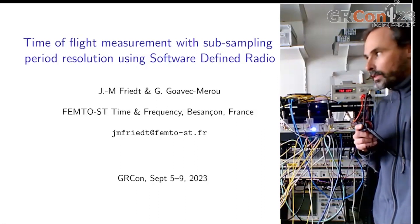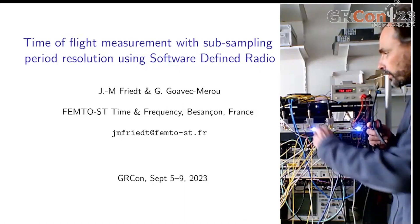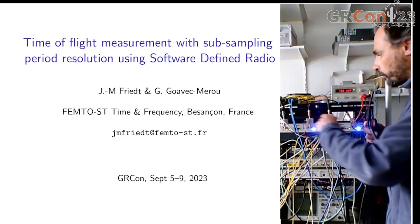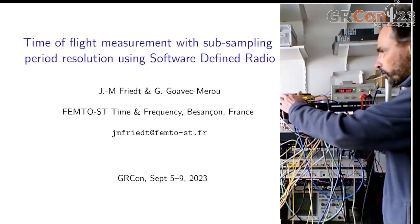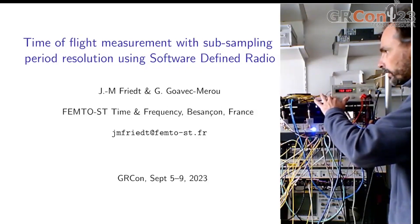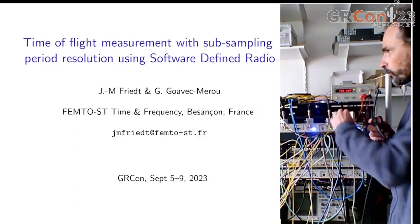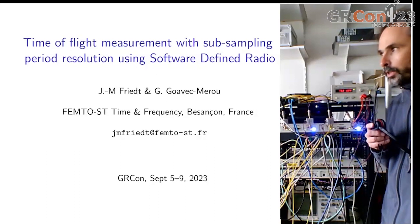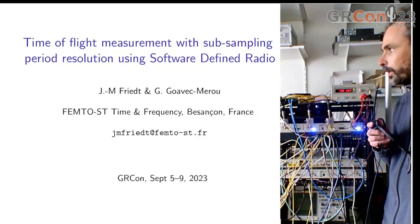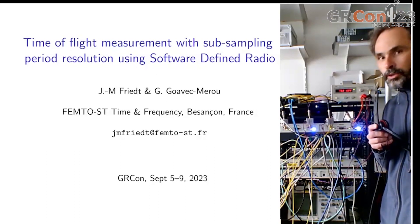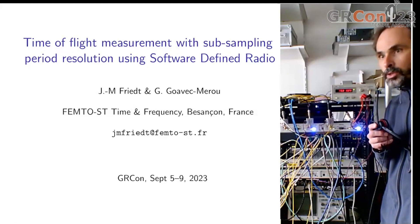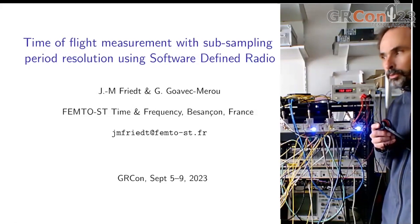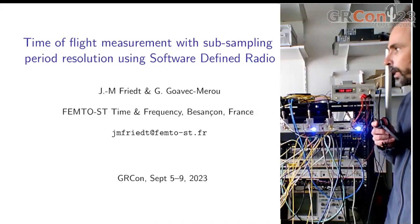In this setup, what you can see is two X310s connected to four cables linked on the roof of this building to antennas tuned to 143 MHz, which is the frequency of the GRAV radar, the French Space Surveillance Radar, whose emitter is located about 30 km from our location.